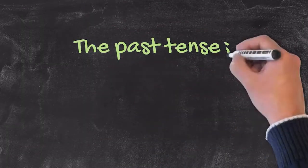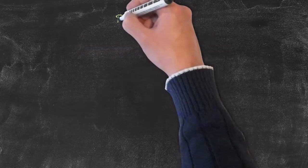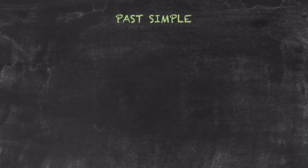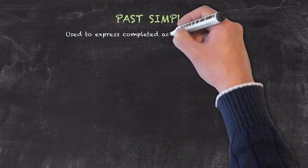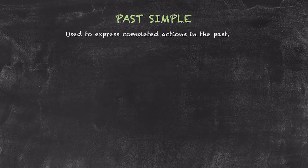And now we'll take a look at the past tenses, first focusing on the past simple tense. The past simple tense is used to express completed actions in the past. Whether the past be a few seconds ago, or whether many years or ages ago, doesn't matter.